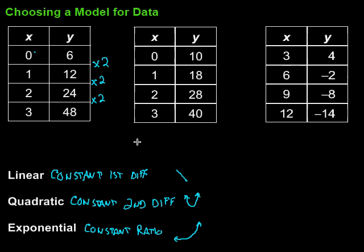Let's take a look at this second one. Again, the x's are in a constant ratio, so we're good to go there, but then we take a look at the y's. 10 to 18, that's plus 8. 18 to 28 is plus 10. 28 to 40 is plus 12. First differences are not constant, so we need to look at the second differences.